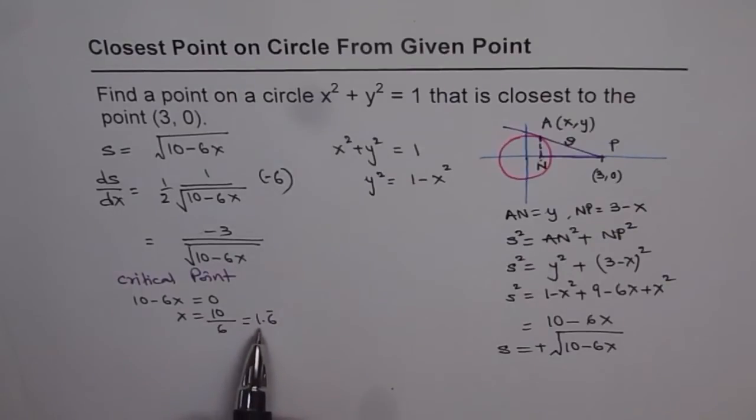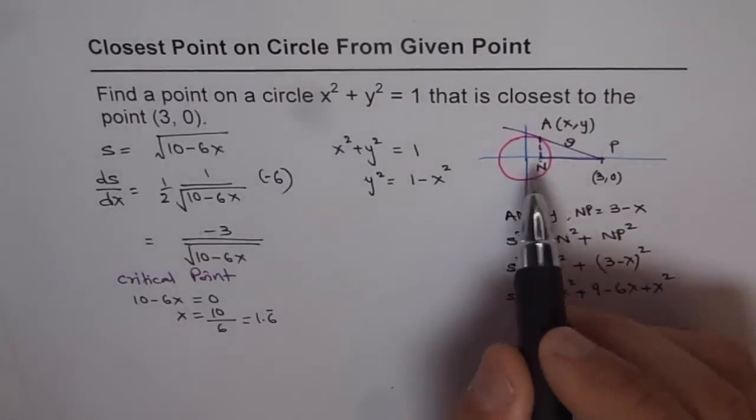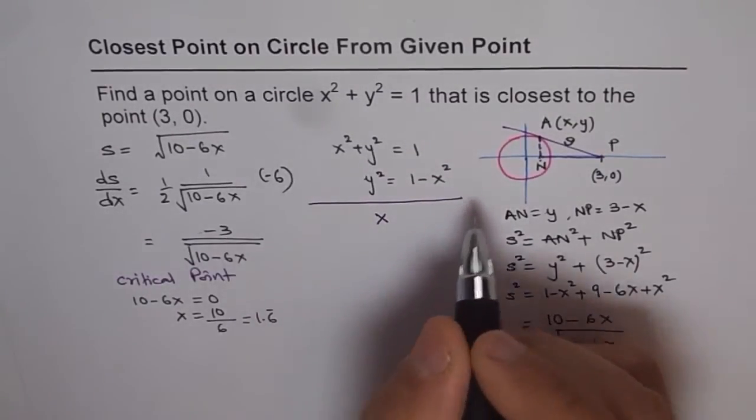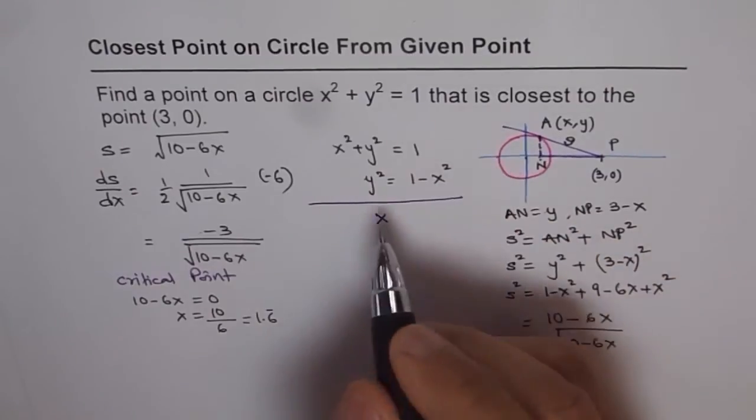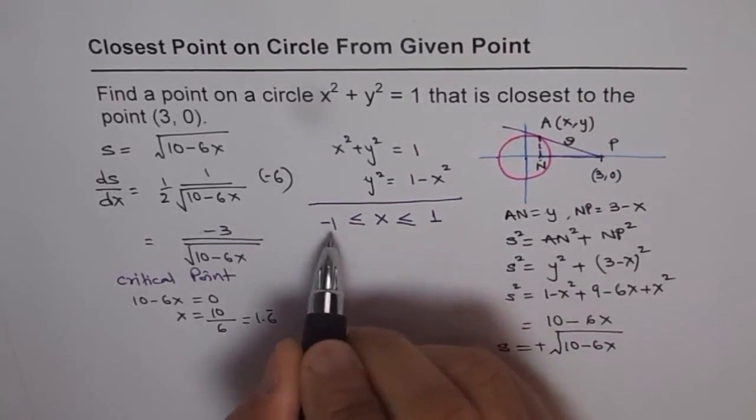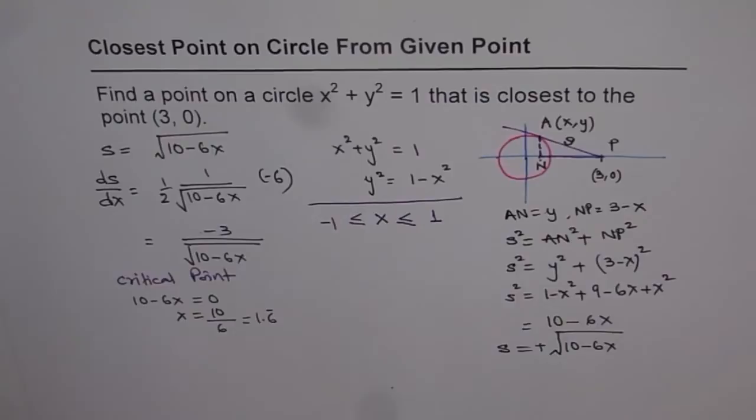Now x equals to 1.6 will minimize, but the thing is our x value cannot be more than 1. x cannot be more than 1 because we have a restriction on this x. x is a point on the circle. So that tells us a very important thing. And that is what is the boundary for x? x could be a point on the circle. That means x is greater than equal to minus 1 but it is less than equal to 1. So x is only between these two values. Now this point is not in our domain at all. So we cannot really consider it. So this is a redundant point for us. But what we have is these two points.